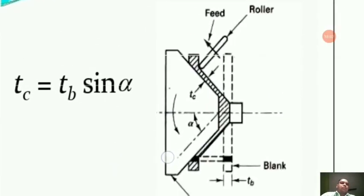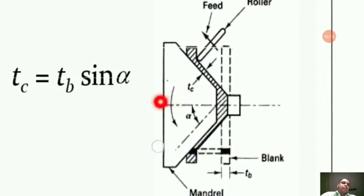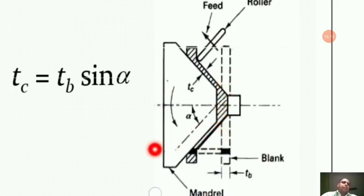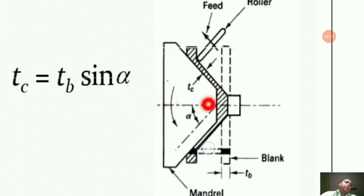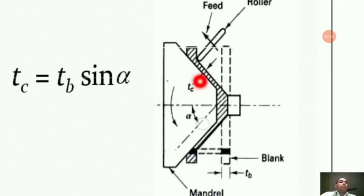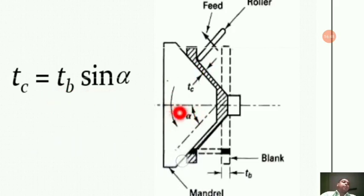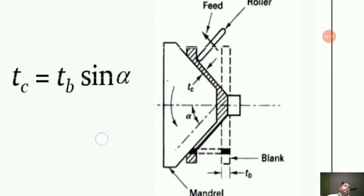In the spinning operation diagram, TC is the final thickness, TB is the initial blank thickness, and α is the angle of the mandrel shape. The formula for final thickness is TC = TB × sin(α). The mandrel gives the shape to the workpiece, and from the shape of the mandrel and the final shape of the workpiece, you can find the angle α.